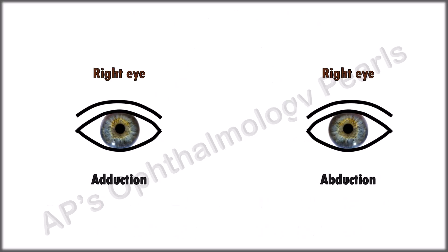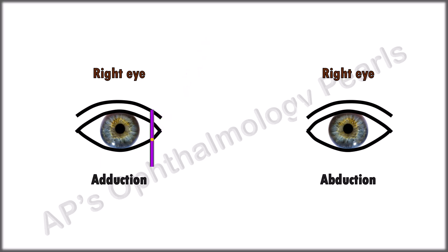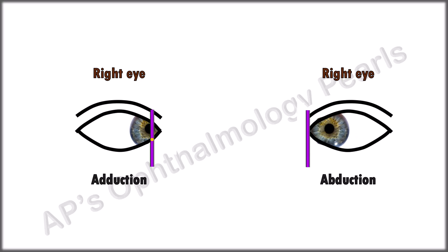How do we know what normal movement is? If you note the lacrimal punctum in maximal adduction, the junction of the medial one third and lateral two thirds of the cornea lies adjacent to the lacrimal punctum. Similarly, for abduction, the temporal limbus just touches the lateral canthus in maximal abduction.